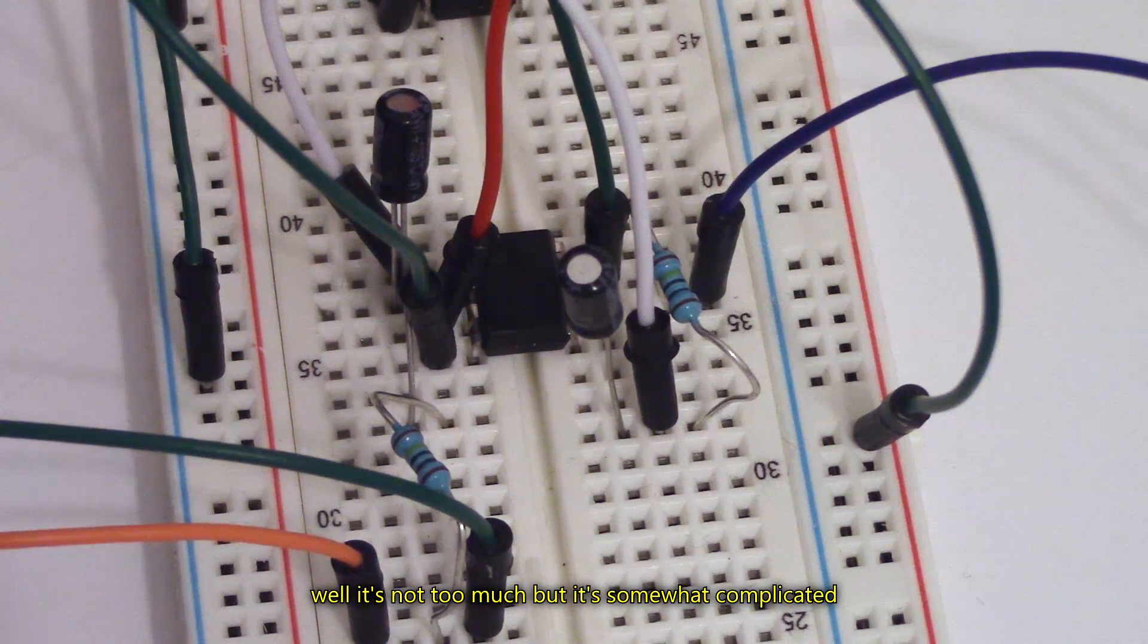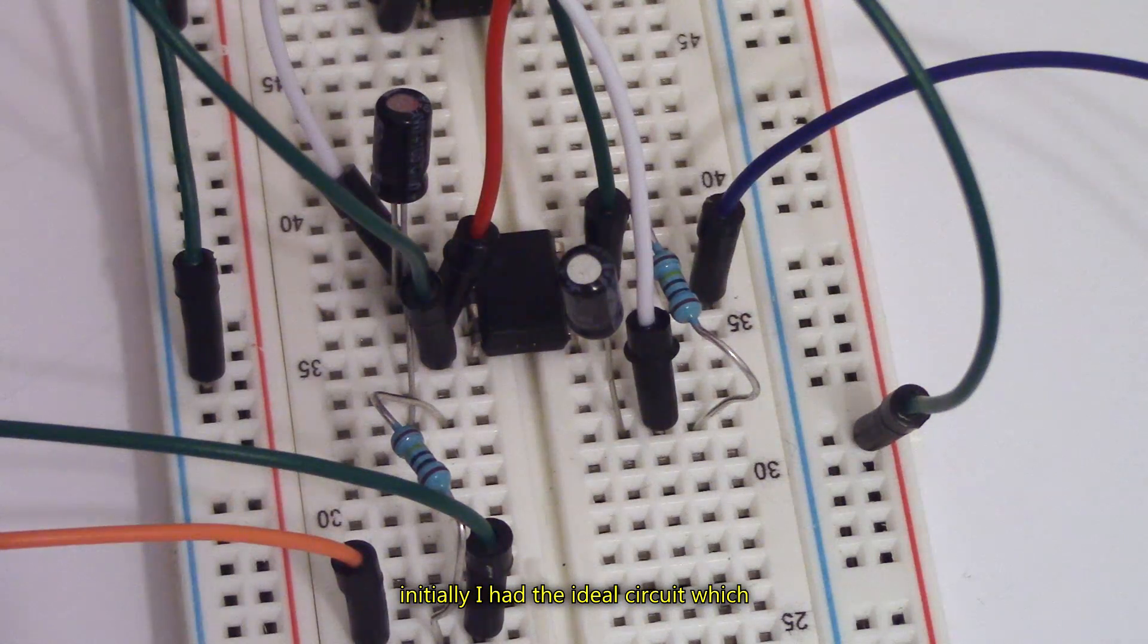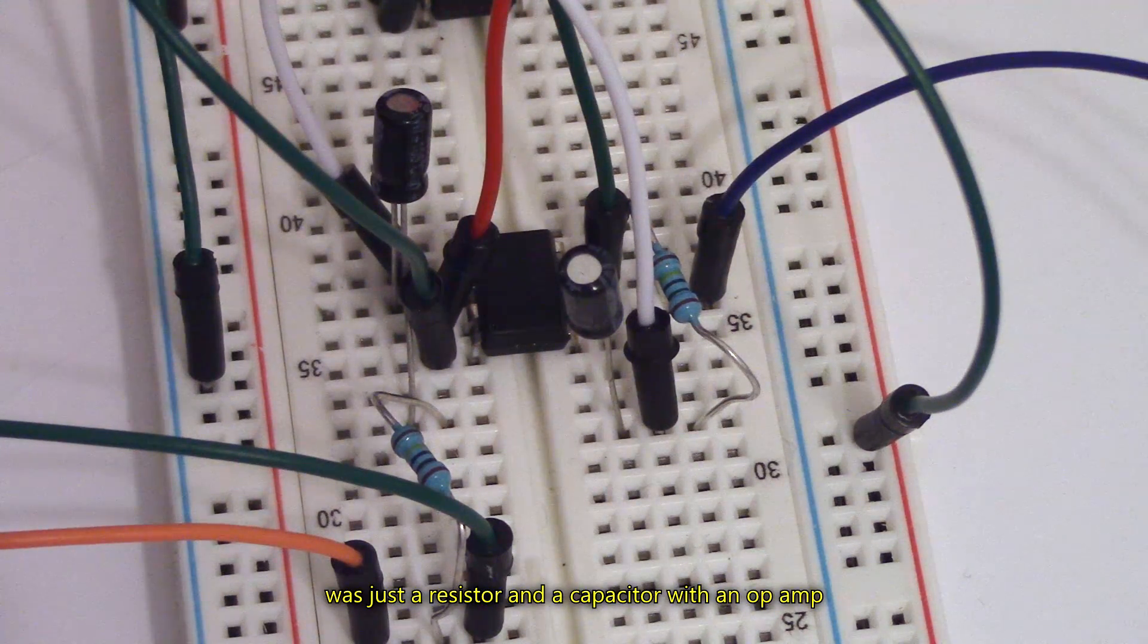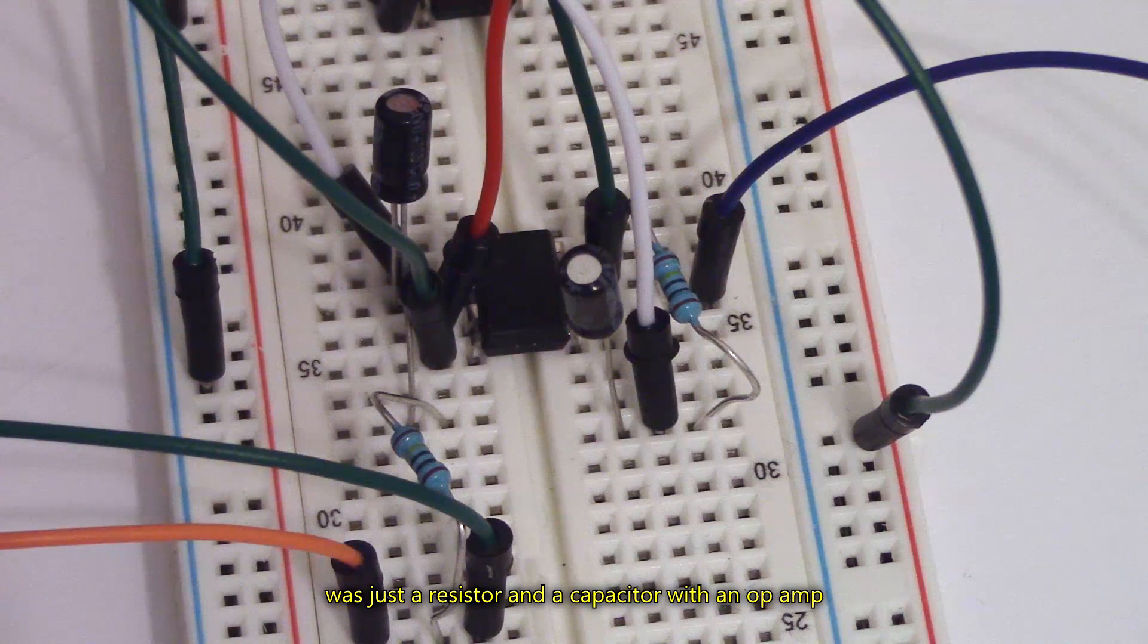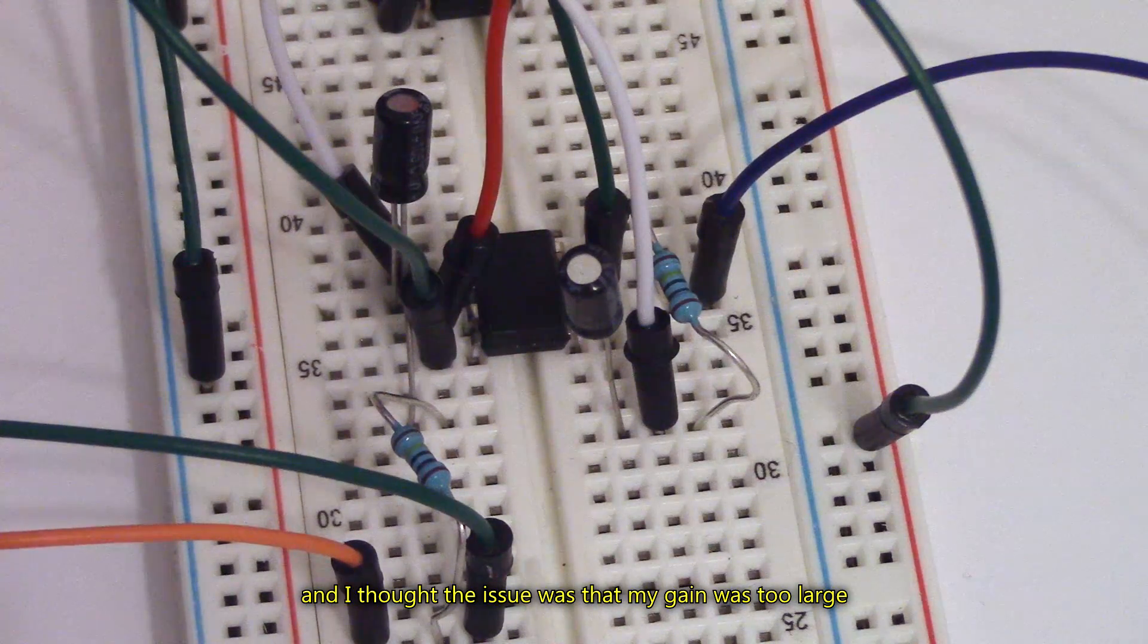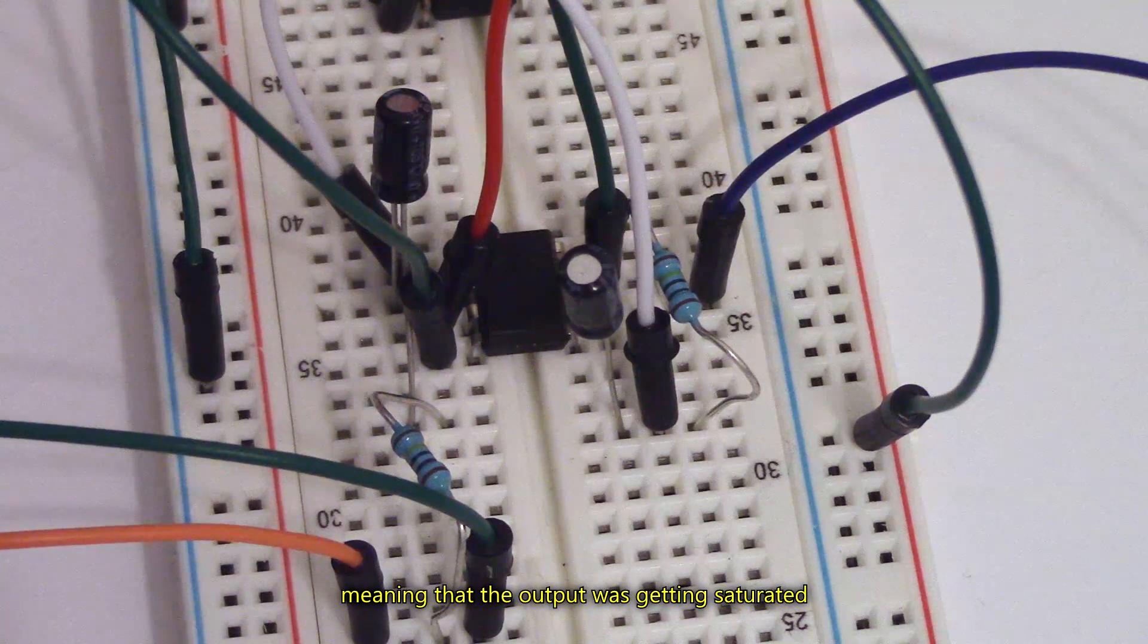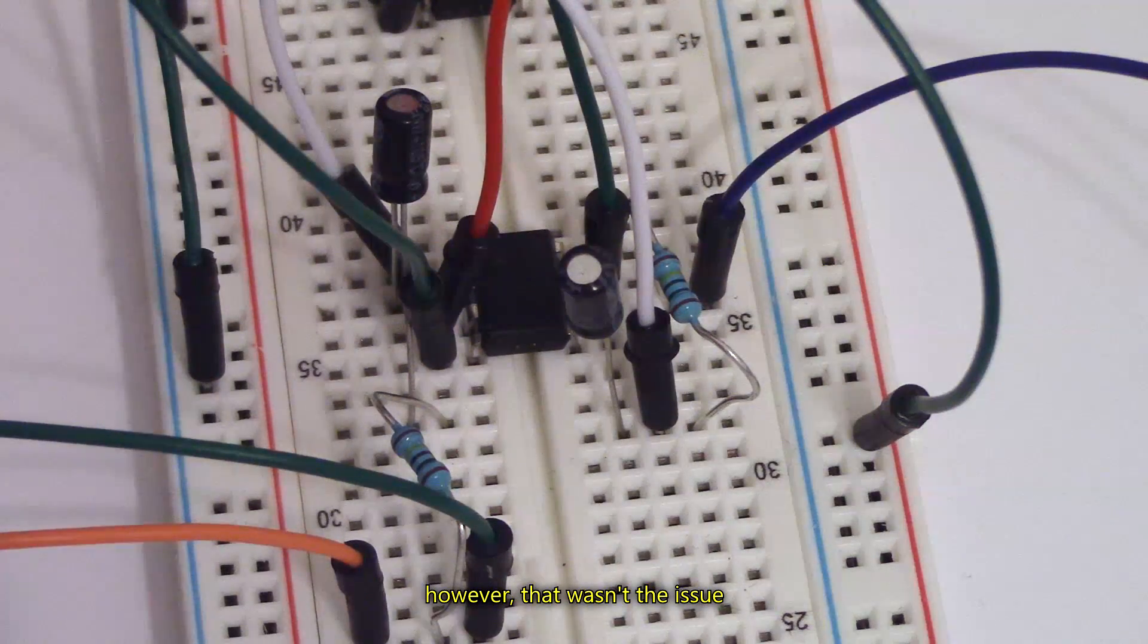Well, it's not too much, but it's somewhat complicated. Initially, I had the ideal circuit, which was just a resistor and capacitor with an op-amp. And I thought the issue was that my gain was too large, meaning the output was getting saturated. However, that wasn't the issue.